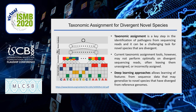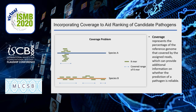Deep learning methods such as CNNs allow learning of local patterns from input data, so these methods have the potential to be applied in the identification of novel species. For the ranking problem, coverage may help to solve this problem.